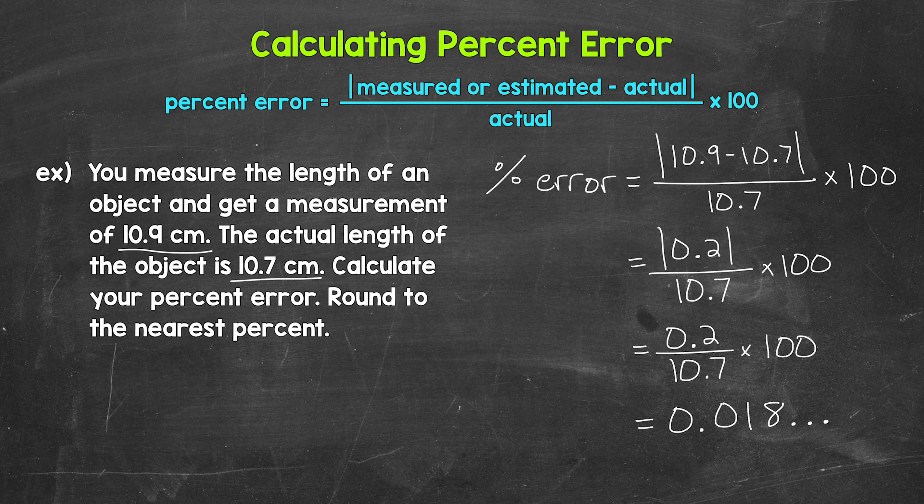to the nearest percent. And we need to multiply by 100 here. So now let's multiply that decimal by 100 in order to convert it to a percent. And we do that by moving the decimal once, twice to the right.